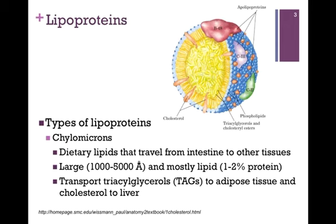Chylomicrons transport triacylglycerols to adipose tissue for storage, but primarily they transport lipids and cholesterol to the liver for use and for repackaging, so that these lipid particles can send lipids to other cells and tissues within the body.